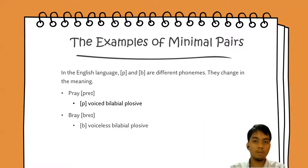The examples of minimal pairs here in English language are P and B, and both of them are different phonemes because they change in meaning, like pray and bray. P is voiced bilabial plosive, while B is voiceless bilabial plosive, and both of them change in meaning.